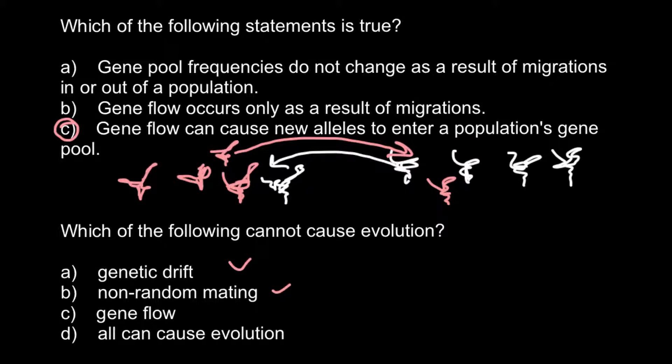Next, gene flow. Gene flow, as you saw here, also causes change in allelic frequencies in population. And change in allelic frequencies, we call evolution. So any change in allelic frequencies in population would be evolution. So this is also the correct answer.